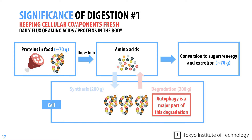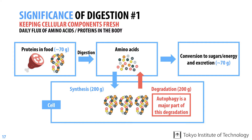This means that our cells degrade as much protein as they synthesize. This may seem futile, but actually has a very important meaning. Continuous degradation and synthesis of cellular components prevent the accumulation of old components, which can be harmful to cells and accelerate the aging of cells and our bodies. In summary, autophagy plays an important role in keeping cellular components fresh.